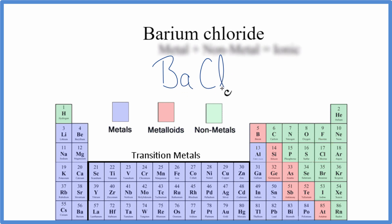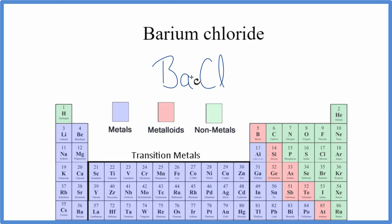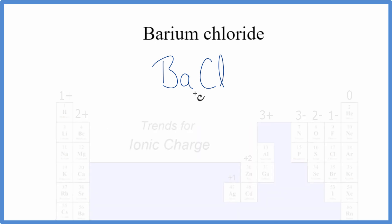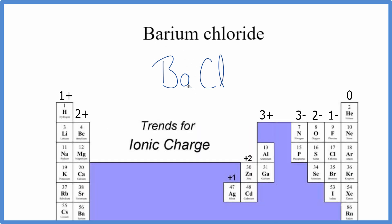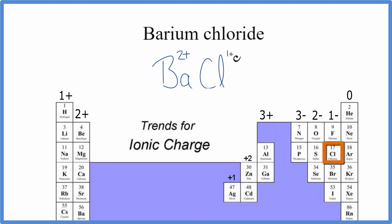So we have a metal and a non-metal, which gives us an ionic compound. In ionic compounds, we have to take into account their ionic charge when we write the formula. Barium is in group two, so it has a 2+ ionic charge. Chlorine has a 1− ionic charge.